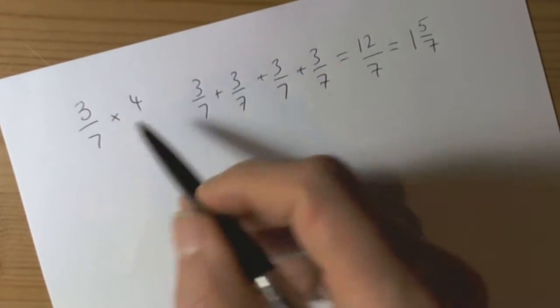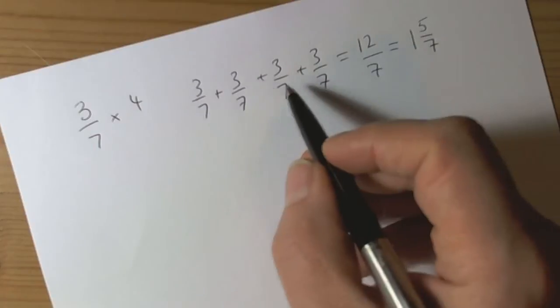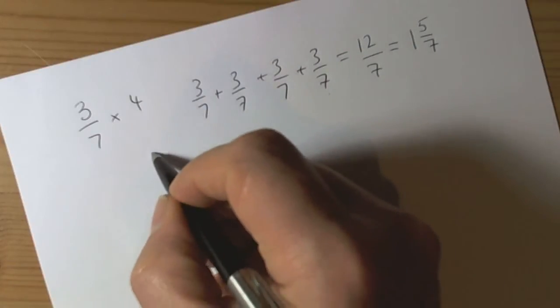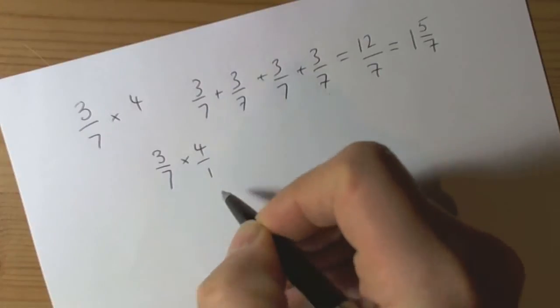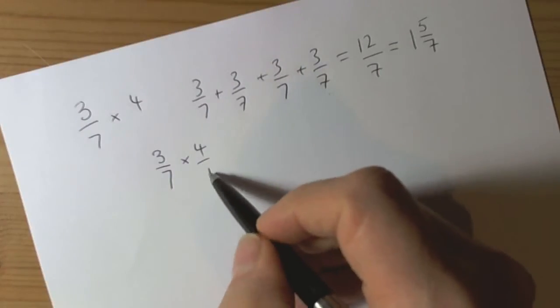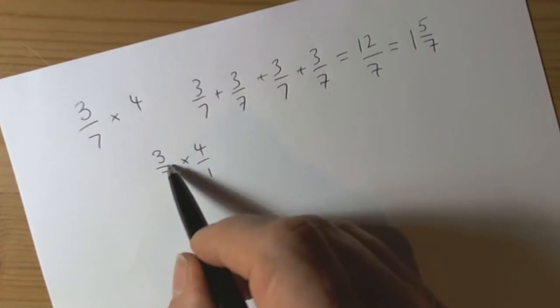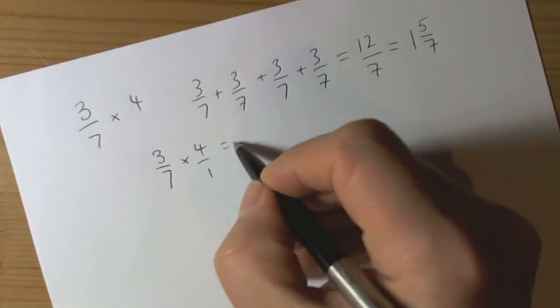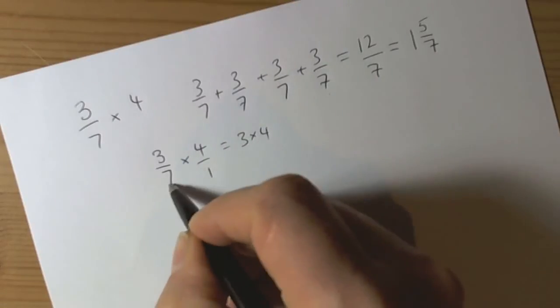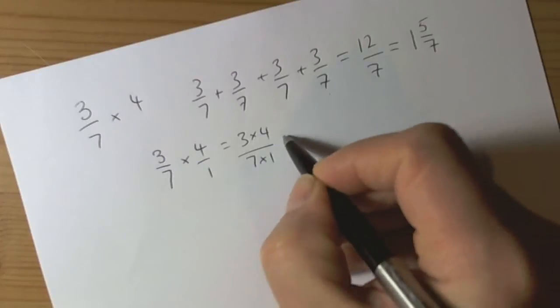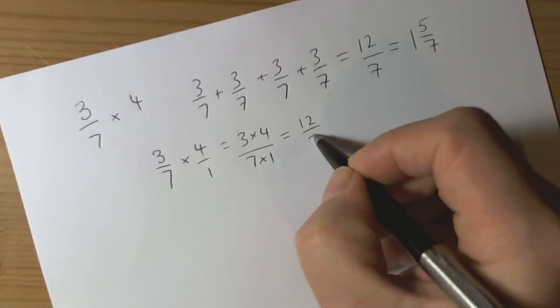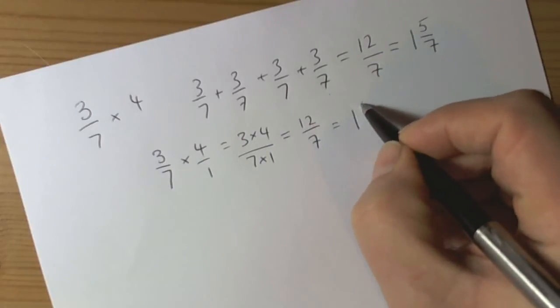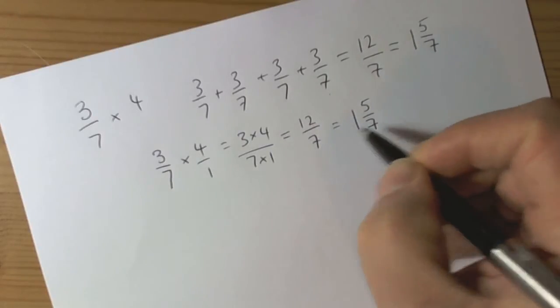A quick way of doing this, though, is rather than write out the number of sevenths we're adding together and so forth, is we can think of this as 3 sevenths times 4 over 1. So 4 is 4 whole 1s. And when we're multiplying fractions, then we've got 3 times 4 and we've got 7 times 1. So multiply the numerators, multiply the denominators, and we end up with 12 over 7 again, which again, we always cancel down to a mixed number if it's an improper fraction.